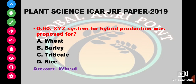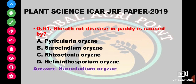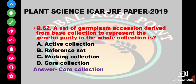XYZ system of hybrid production was proposed for wheat, barley, or rice. The answer is wheat. Sheath rot disease in paddy is caused by Pyricularia oryzae, Sarocladium oryzae, Rhizoctonia oryzae, or Helminthosporium oryzae. The answer is Sarocladium oryzae.